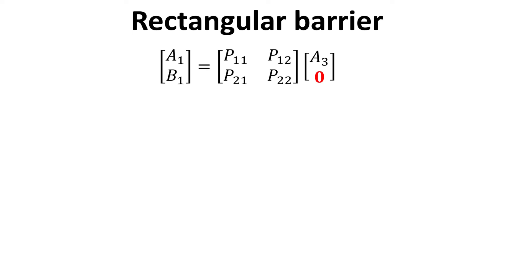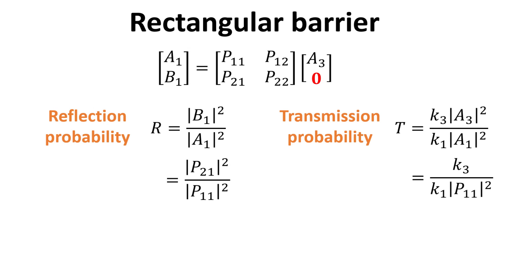So, let's gather all our key ingredients. We have shown that the scattering amplitudes vector in region 1 and 3 are related via the propagation matrix, whose matrix elements we know how to obtain. We are interested in the case with current injecting from the left of the rectangular barrier due to A1. Thus we will only have a reflected current characterized by B1, and a transmitted current characterized by A3. We can therefore set B3 to 0. We have also the expressions for the reflection and transmission probability, expressed in terms of the scattering amplitudes. The propagation matrix allows us to express these amplitudes in terms of the matrix elements of the propagation matrix as shown. We see that only P11 and P21 are relevant here.